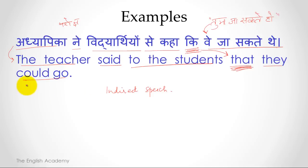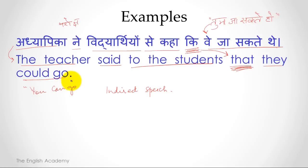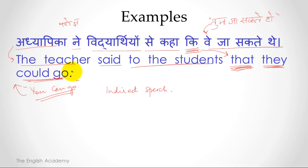When this was direct speech, it was: the teacher said to the students, 'You can go.' In indirect speech it becomes: the teacher said that they could go. You can see that 'you can go' has converted to 'they could go.' Now let us go ahead and see what the rules are for making this change.